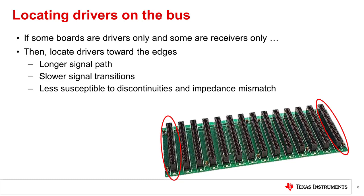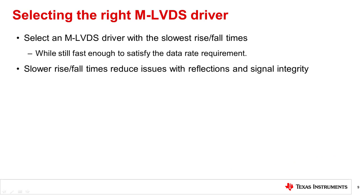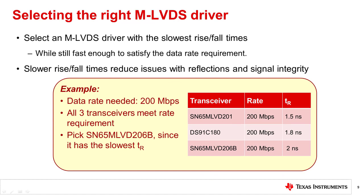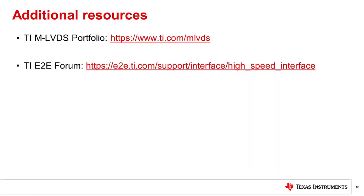When selecting an MLVDS driver for your application, select one that has the slowest rise and fall times you can get by with. Check the MLVDS transceiver's data sheet for ones that satisfy the required data rate, then from among those select the transceiver whose driver has the slowest rise and fall times. Slower rise and fall times reduce issues with reflections and signal integrity. As an example, for an application requiring 200 megabits per second, from a list of transceivers all supporting 200 Mbps, we should pick the SN65MLVD206P, which has the slowest rise and fall times.